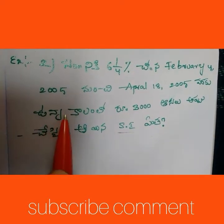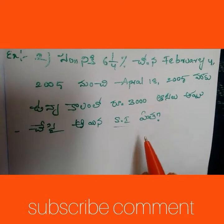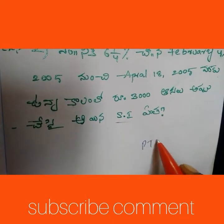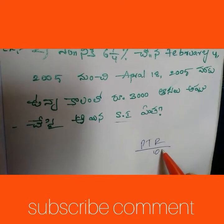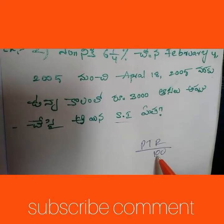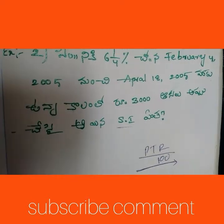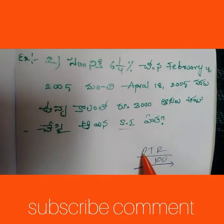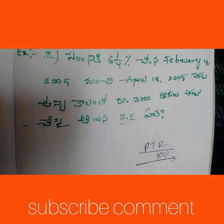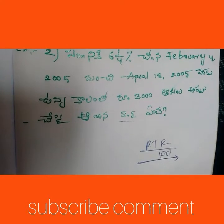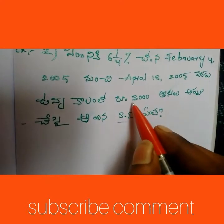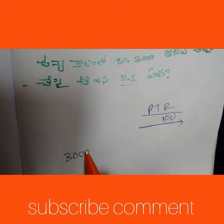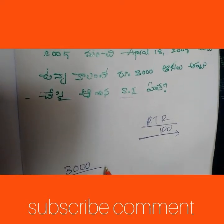Friends, let me show you a form load. The first one is P, the principal. The principal is 3,000. Using the formula PTR/100.